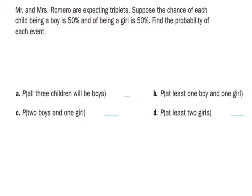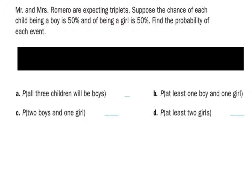All right, there are a few ways I'm going to explain this one. Let's start with the first one. The first thing I'm going to need is a bar, and I'll explain what this represents. So this bar represents the overall chances of having a kid, whether it be a boy or a girl.